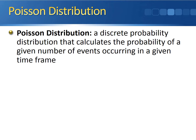More specifically, the Poisson distribution is a discrete probability distribution that allows us to calculate the probability of a given number of events that occur in a given time frame. It's discrete just like the binomial distribution. In the binomial distribution, these events were called successes. In the Poisson distribution, the events are called arrivals — it's the number of arrivals that you witness during some given period of time.